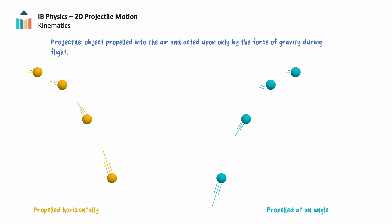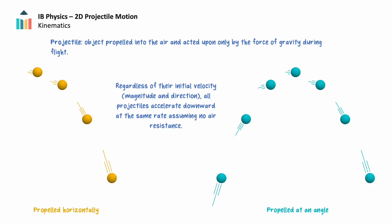In these scenarios the projectile accelerates downward while moving horizontally at a constant speed. Regardless of the magnitude or direction of their initial velocity, all projectiles will accelerate downward at the same rate — 9.8 meters per second squared, or the acceleration of freefall near the Earth's surface — provided there is no air resistance acting on the projectile.